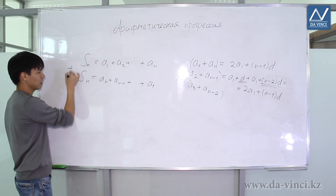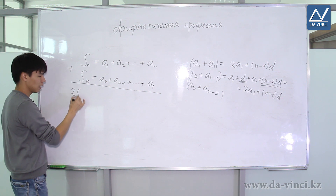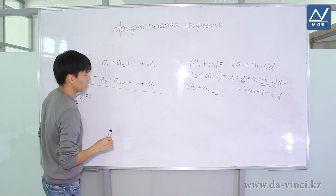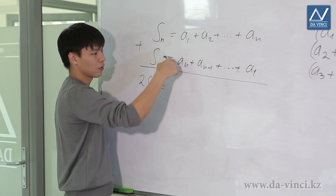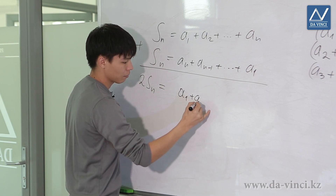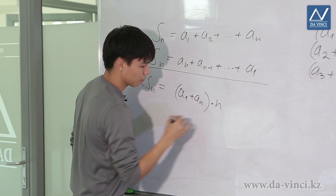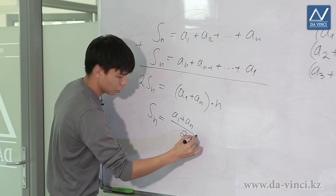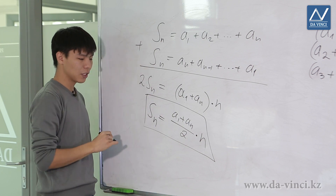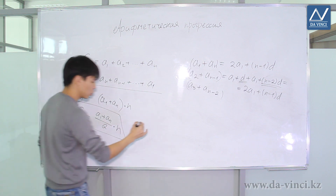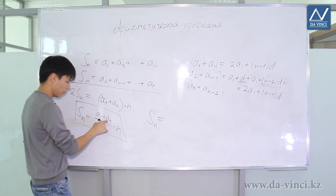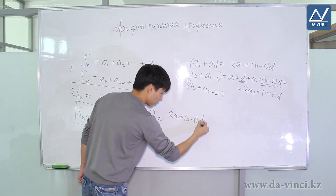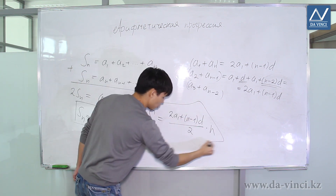Adding the two expressions for Sn gives 2Sn on the left. On the right we get (a1 plus an) plus (a2 plus an minus 1) plus ... plus (an plus a1) — n identical expressions, each equal to a1 plus an. So 2Sn equals n times (a1 plus an), giving the formula: Sn equals (a1 plus an) divided by 2, multiplied by n. We can also substitute the nth term formula for an to get: Sn equals (2a1 plus (n minus 1)d) divided by 2, multiplied by n.